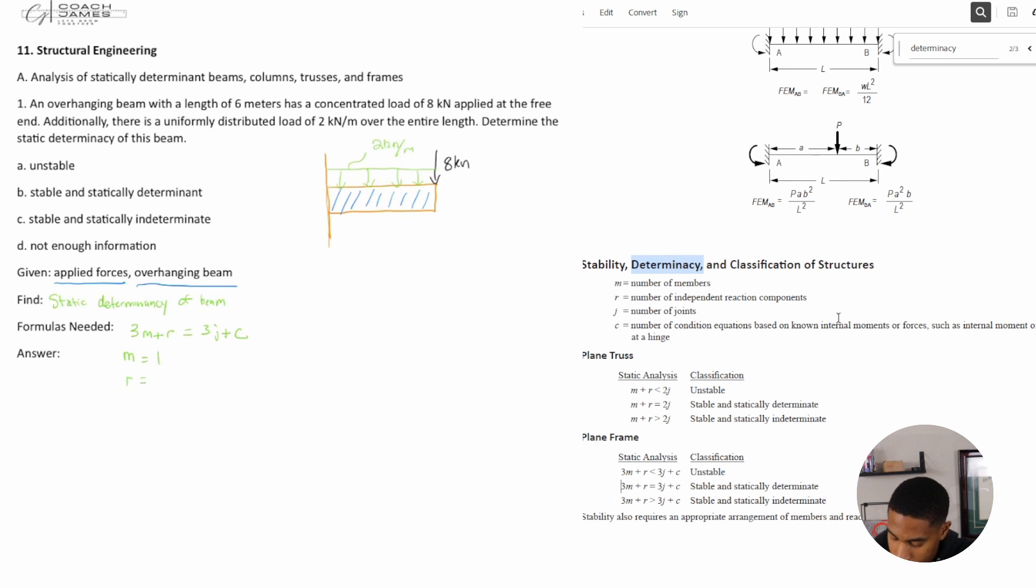What about R? R is equal to the number of independent reactions. So reactions, if you have a support, then that support has reactions, right? And so for a fixed support, how many reactions will you have? Well, let's draw them out. I'll just say this is point A and this is point B. So we have an Ay reaction, we have an Ax reaction, and then we also with fixed supports you have a moment about A. So how many reactions is that? Well, you got one in the Y, one in the X, and then your moment, that's three. You have three reactions.